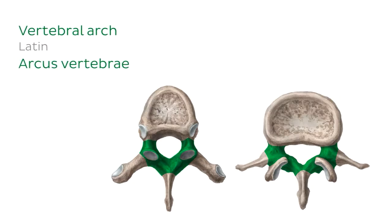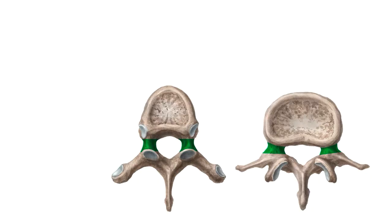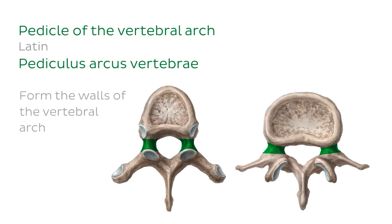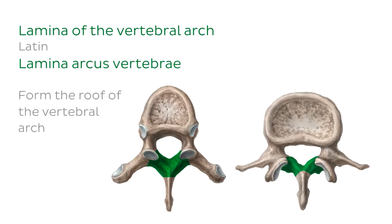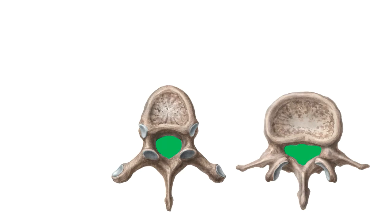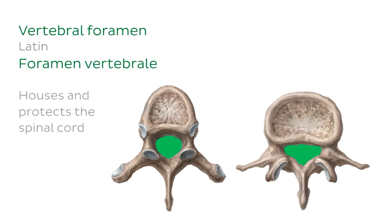The next bony structure is the vertebral arch, highlighted in green on both the thoracic and lumbar vertebrae. The vertebral arch is formed by two structures: the pedicles, which form the walls, and the laminae, which fuse in the midline to form the roof. The vertebral body and the vertebral arch enclose the vertebral foramen, which houses and protects the spinal cord. The thoracic vertebra has a small circular vertebral foramen, whereas the lumbar vertebra has a larger triangular one.